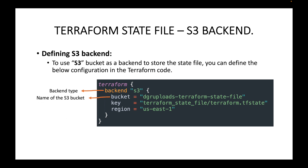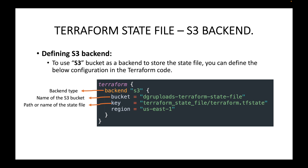Then you have the name of the bucket where you are going to store the state file — make sure this bucket already exists. Then you have the key, which is basically the path inside the bucket or the name of your state file. By default Terraform uses terraform.tfstate, however with a remote backend you can give a different name. In this example, there will be a folder called terraform_state_file and inside that folder the terraform.tfstate is stored. Finally, you provide the region in which the bucket is created.